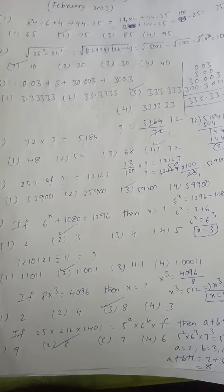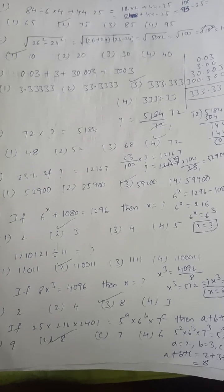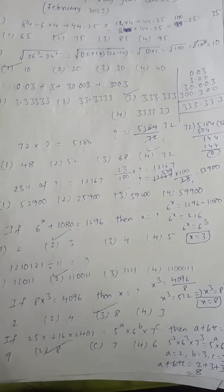Next: 1210121 divided by 11. The answer is 110011, so option 2.